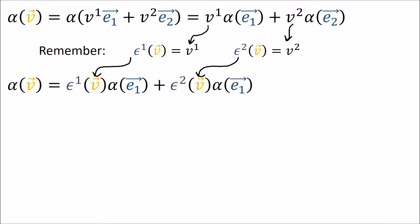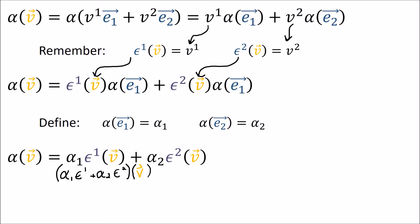We're going to make these definitions here. We define alpha of e₁ as the number α₁ and we define alpha of e₂ as the number α₂. That means we can rewrite this. Using the scaling and addition rules for covectors we can rewrite this sum as a single covector like this.